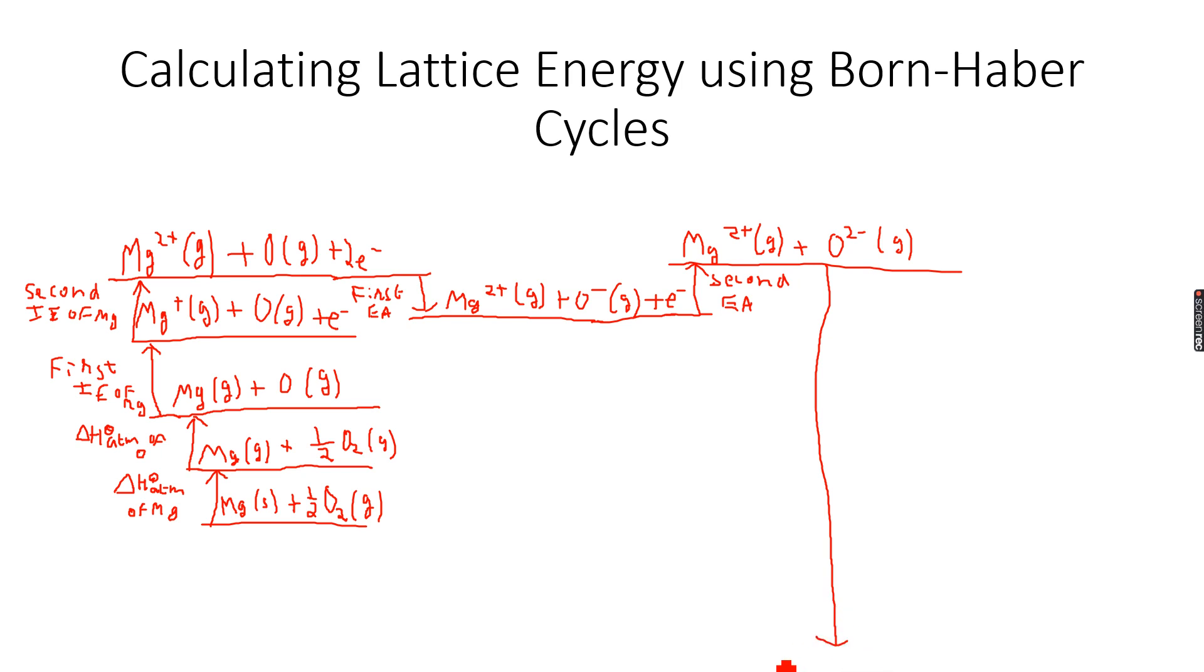So this will come straight down to give me MgO solid. So this will be my lattice energy of MgO. Lattice energy of MgO. And then I will go down from here. So I can either go directly from the elements to MgO solid or I can take the long route to go to MgO solid. So this is the enthalpy change of formation of MgO solid.